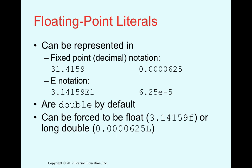Floating point literals can be written in decimal notation, like 31.4159, or in scientific (e) notation. For example, 3.1e1 means 3.1 multiplied by 10 to the power of 1, and 6.2e-5 means 6.25 multiplied by 10 to the power of -5. All literals are double by default.